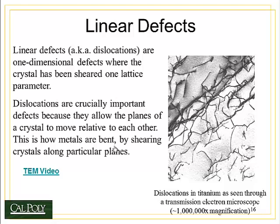Dislocations tend to prefer simple crystal structures, and thankfully metals have the simplest crystal structures, like BCC and FCC. These dislocations are also very, very tiny. This is a picture of dislocations taken by a transmission electron microscope, and the magnification you're seeing here is about one million times. These dislocations are on the order of hundreds of atoms long — there might be a hundred or two hundred atoms from the tip of a dislocation to its end. You can also see how dislocations run into each other and create what's called a dislocation network.